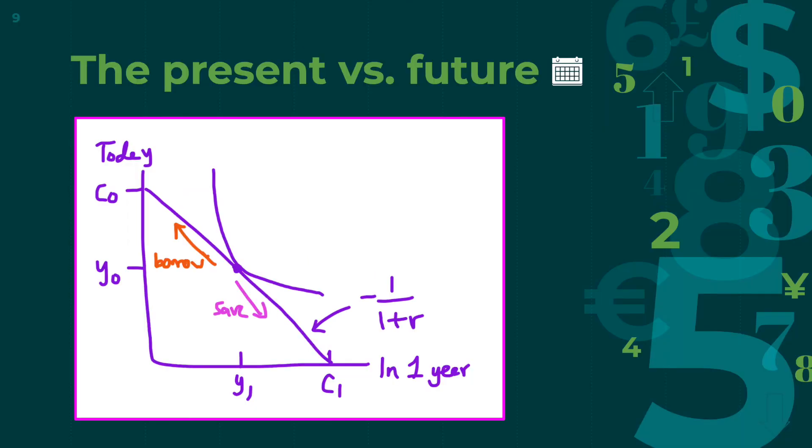Let's talk about the present and the future, which is all about borrowing and saving, and comparing current income and consumption to future income and consumption. When we borrow and save, we face an interest rate R, which we'll assume to be the same for both borrowing and saving, for simplicity.